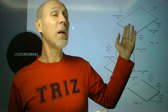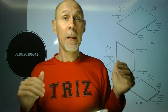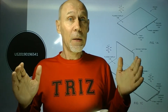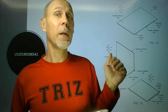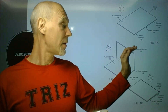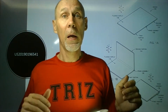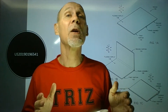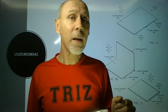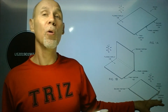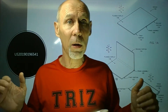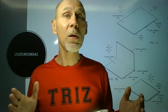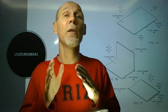We have a problem because the middle part has to change its length. When the device is fully open at 180 degrees, the middle part is short. When it is bent to 90 degrees, it gets longer. And finally, when the smartphone or notebook is fully closed, it should be even longer. So we have a contradiction: the bending part in the middle should be both short and long.